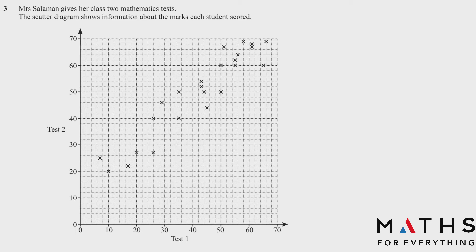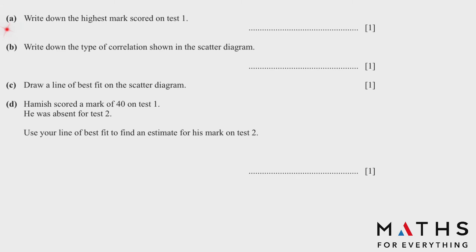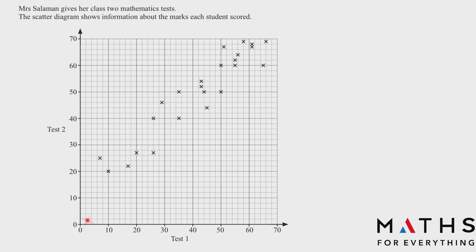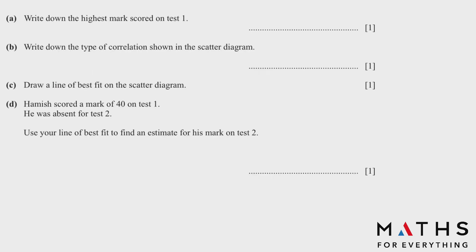Question 3: We have been given a scatter diagram. Mrs. Salaman gives her class two mathematics tests. The scatter diagram shows information about the marks each student scored — this is Test 1 and this is Test 2. Part a: write down the highest mark scored on Test 1. Looking at Test 1, the highest mark is here. There are 5 lines between 60 and 70, so each line represents 2 marks — giving us 62, 64, and 66. The answer is 66.